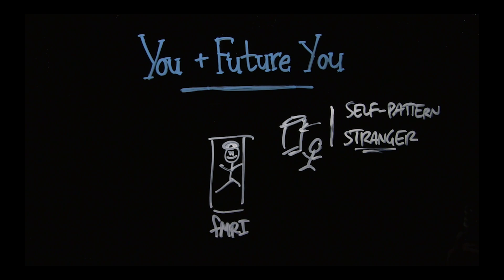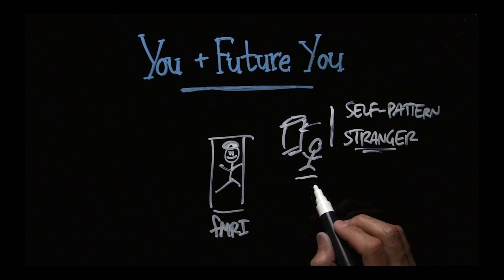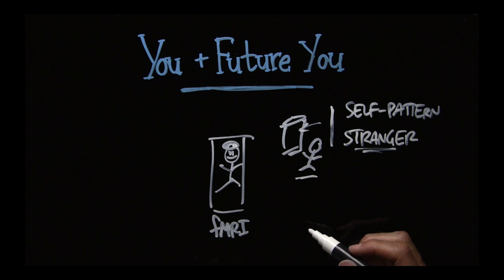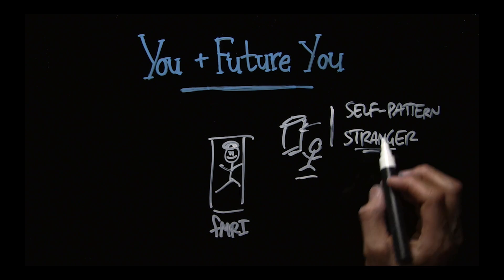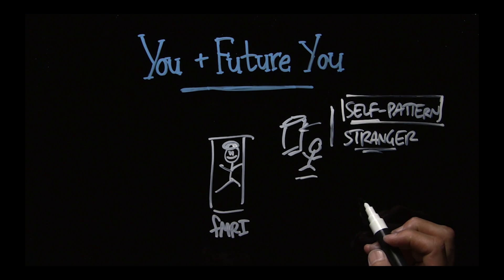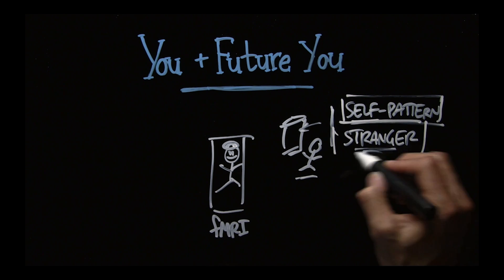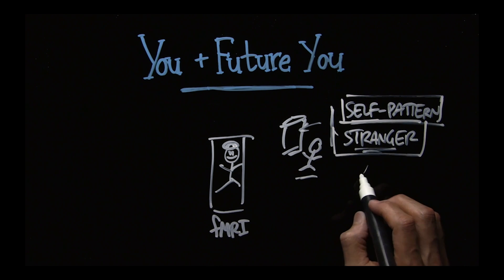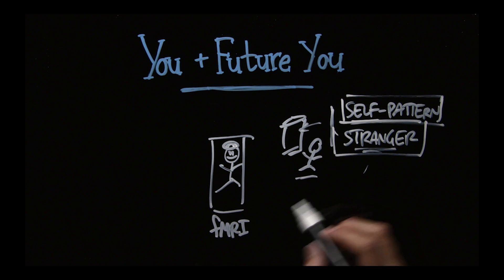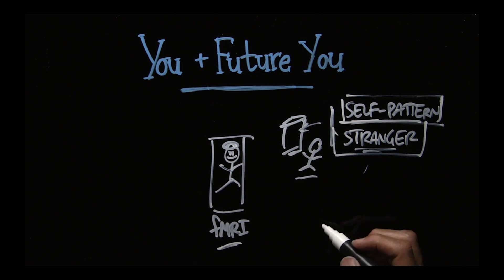Then third part of the experiment, researcher says, now please think about your future self. Think about your future self in 10 years. What do you think happens? What's fascinating is that some people, when they think of their future self, elicit a self pattern, but other people elicit a stranger pattern. It's as if thinking about their future self is thinking about someone else. It elicits the same type of pattern in the fMRI. How fascinating is that?